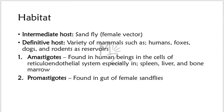Intermediate host: the sandfly — female vector. Definitive host: a variety of mammals such as humans, foxes, dogs, and rodents as reservoirs. The amastigote form is found in human beings in the cells of the reticuloendothelial system, especially in the spleen, liver, and bone marrow. Promastigotes are found in the gut of female sandflies.